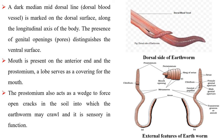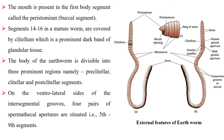Mouth is present on the anterior end and the prostomium is a lobe that serves as a covering for the mouth. The prostomium acts as a wedge to force open cracks in the soil into which the earthworm may crawl, and it is sensory in function. The mouth is present in the first body segment called the peristomium.